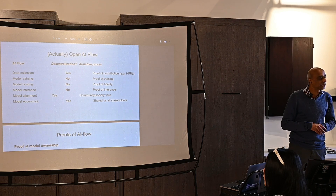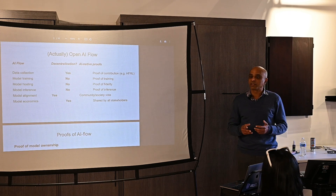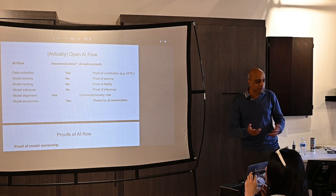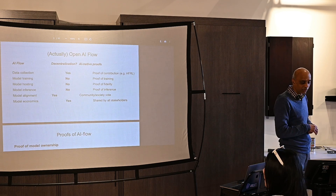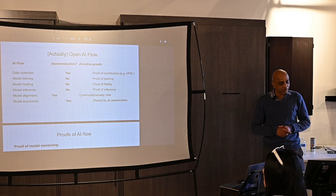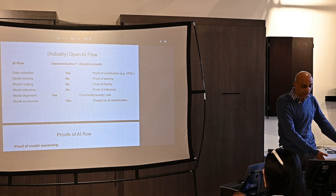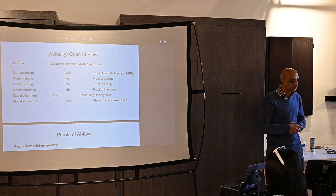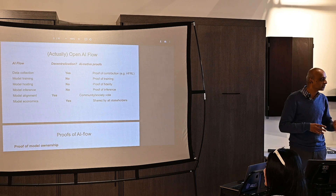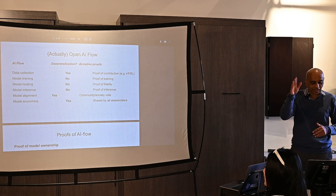The question is about decentralizing AI. Which parts of this flow do you want to decentralize — or do you want to decentralize in the first place? The AI flow looks like this: you collect the data, you train the model, someone hosts the model, you have inference — there's a prompt and an inference — then you worry about alignment afterwards. And then there's a whole economics aspect around it.